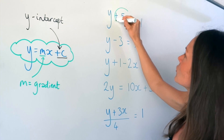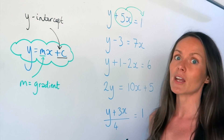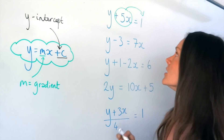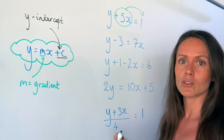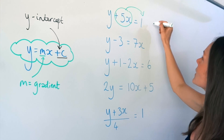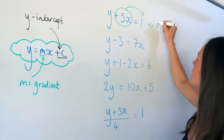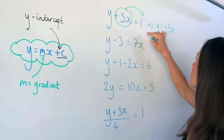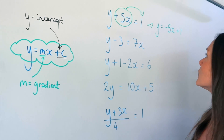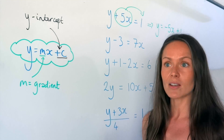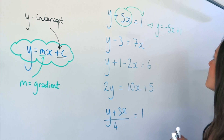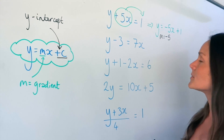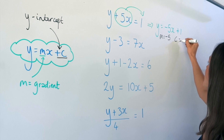In the first one, I need to move that positive 5x to the other side of the equation so that y is by itself. Remember, when terms move across the equal sign they change sign — so if they were positive, they become negative. So this equation becomes y equals negative 5x, and that 1 hasn't moved, so it's still positive 1 — I write plus 1. Now that I've rearranged to get y equals, I can spot the gradient: m is minus 5, and the y-intercept c is positive 1.